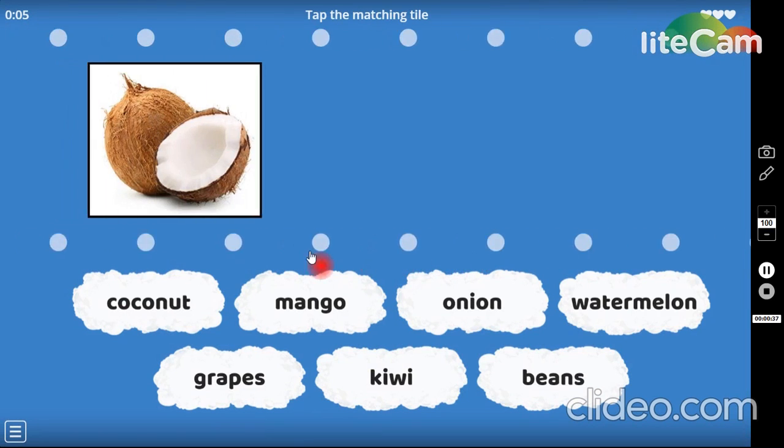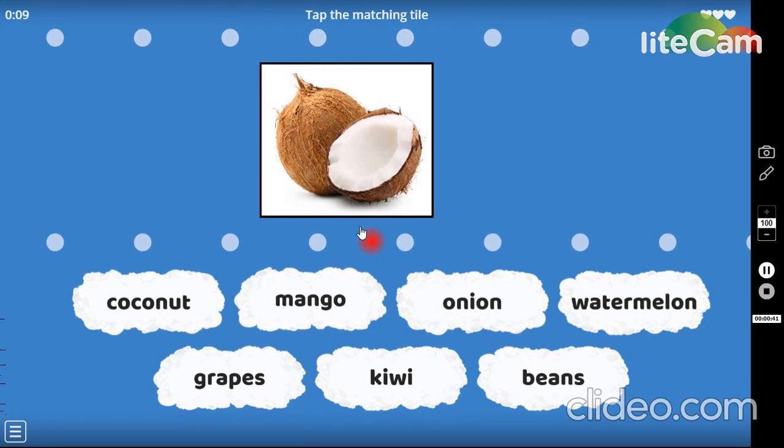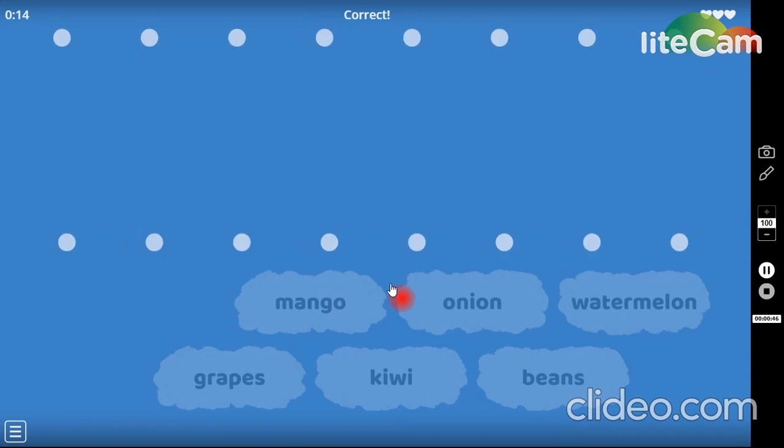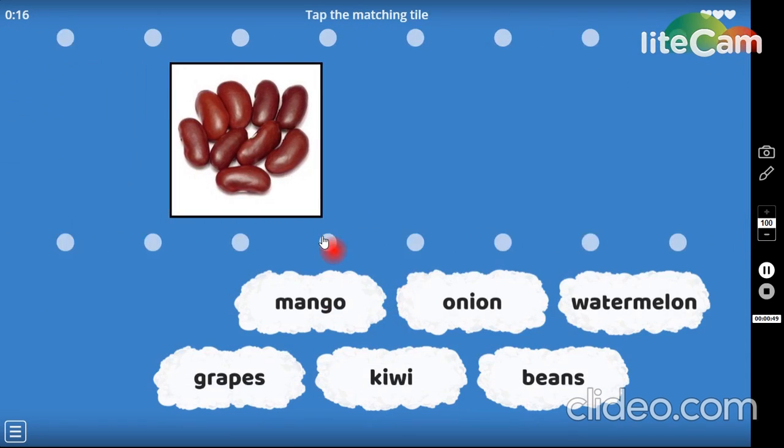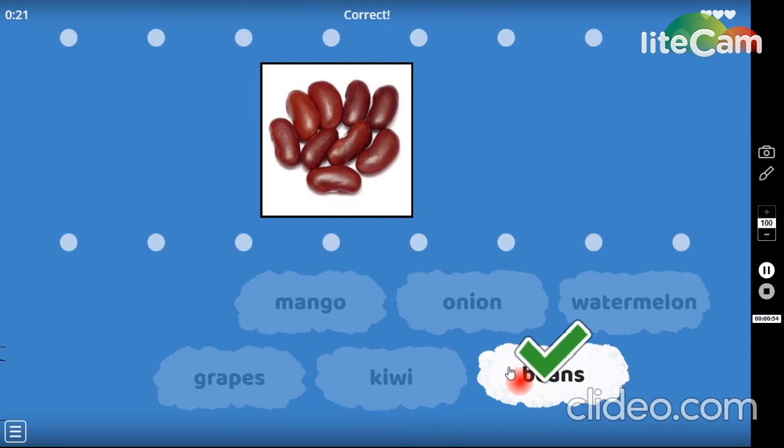Okay, now, can you guess what is it? It's a coconut. Yes. Now here we have, yes, beans.